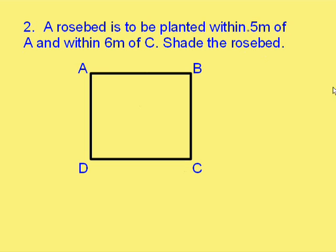Another example. A rose bed is to be planted within five metres of A and within six metres of C. Well, if it's within five metres of A,